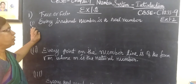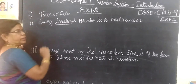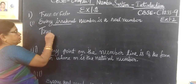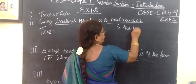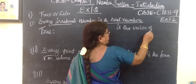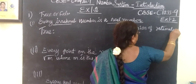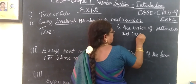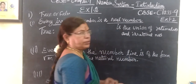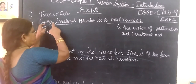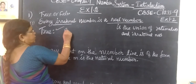Every irrational number is a real number. It is true because — what is a real number? A real number is the union of rational numbers and irrational numbers, by definition. So every irrational number is a subset of the real number. Therefore it is true. Reason: by definition.